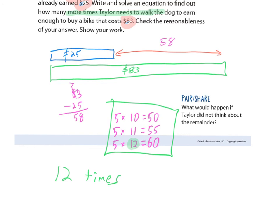I'll stop right there — Miss Erickson will take you through the rest. A lot of these are tricky, so please take your time. Think about the remainder in this one — if Taylor didn't account for the remainder, eleven isn't enough. She'd be two dollars short. Think about those remainders, go slow, and do the best you can. It's okay to get it wrong, but it's not okay not to try. Good luck, guys.